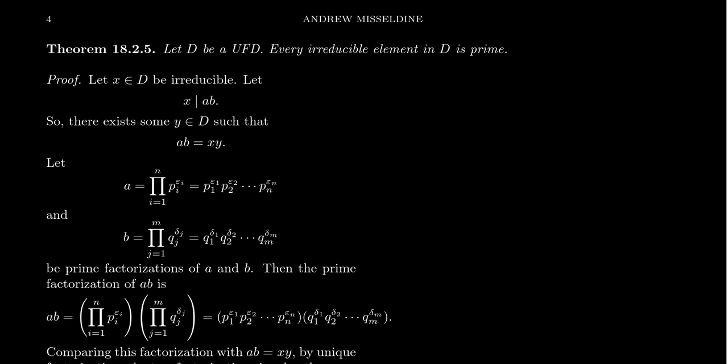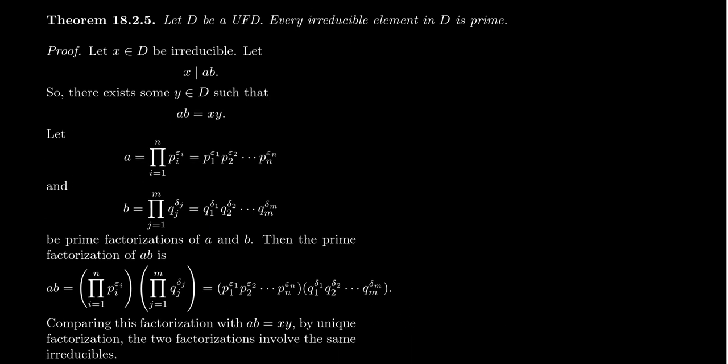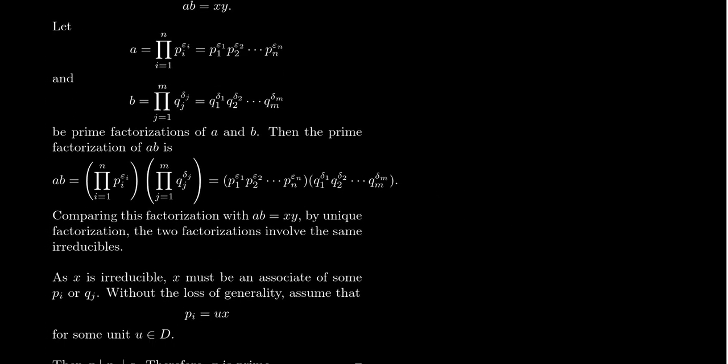And these prime factorizations are unique up to reordering and association, of course. So then the factorization of AB is then going to be take all the irreducible factors of A, get all the irreducible factors of B, put them together. And so this is a prime factorization of AB. Since we're in a UFD, this factorization is unique.